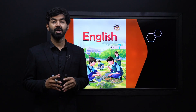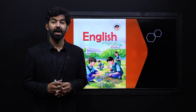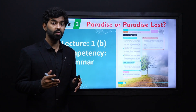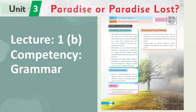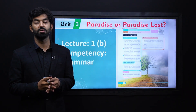My dear learners, we are dealing with grade 7 and we are going to continue our video lessons with unit number 3. It's a poem. Its title is Paradise, or Paradise Lost. This will be our lecture number 1b with the competency of grammar.